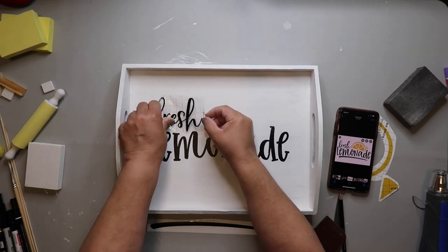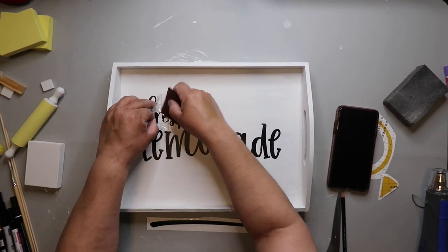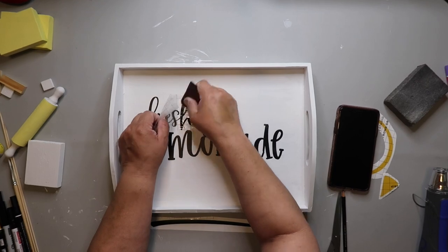I'm not sure if I'm using the wrong vinyl slash transfer tape. I don't know. I bought it from, it's not Cricut vinyl or transfer tape. I bought it from Hobby Lobby though. It's the other brand that they carry.